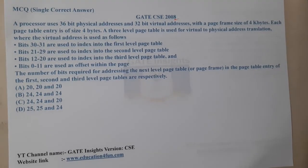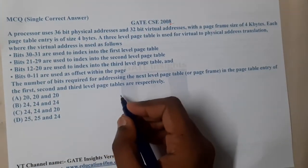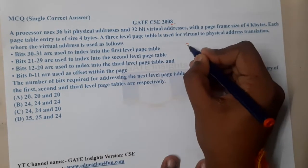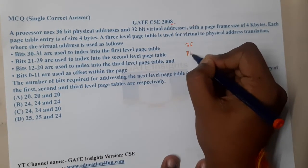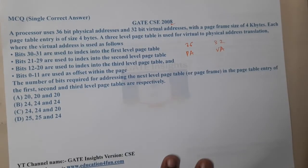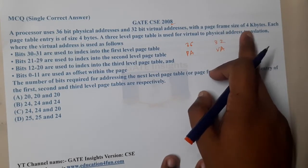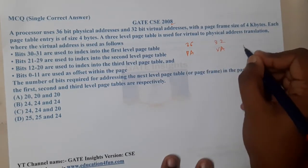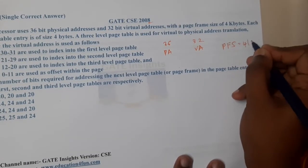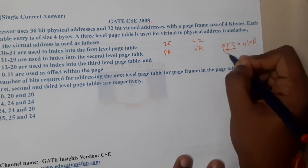So the physical address length is 36 bits and 32-bit virtual address with a page frame size of 4 kilobytes. So each page size is 4 KB, guys - indirectly that's what they are saying.